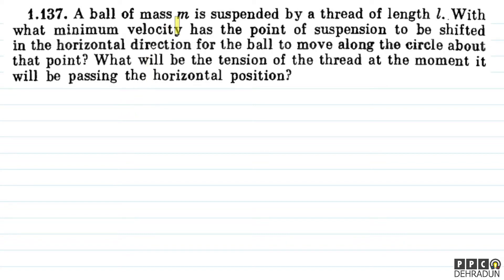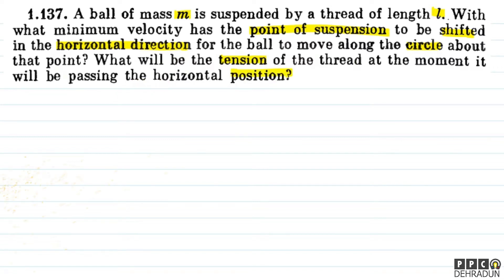The question says: a ball of mass M is suspended by a thread of length L. With what minimum velocity has the point of suspension to be shifted in the horizontal direction for the ball to move along the circle about that point? What will be the tension of the thread at the moment it will be passing the horizontal position?